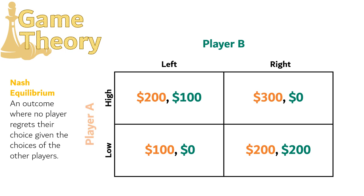Let's try another game. Here we have player A and player B. Player A can play low or high, and player B can play left or right. In the payoff matrix, we can see what each player gets if they land on that outcome. If player A plays high and player B plays left, A gets $200 while B gets $100. Does any player regret their choice? Player A doesn't — if they go back in time and pick low instead, they would end up with $100 instead of $200. If player B chose right instead of left, they would get $0 instead of $100. So neither player regrets their choice, meaning this is a Nash Equilibrium.